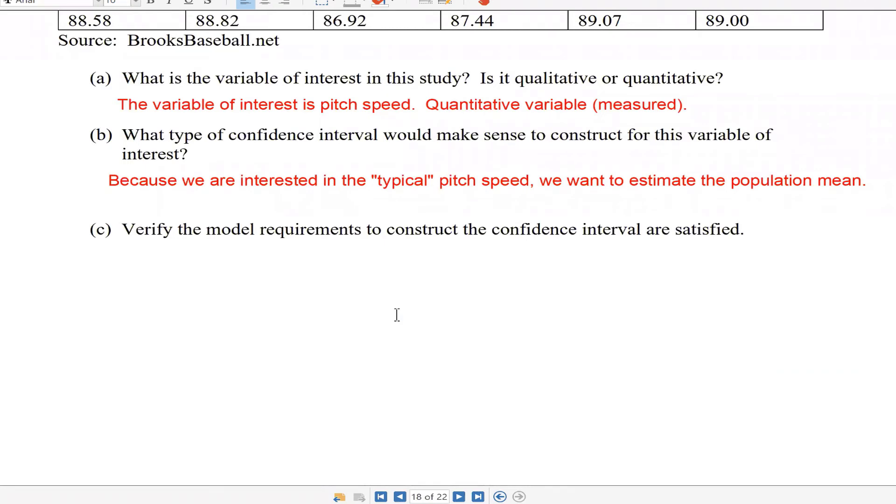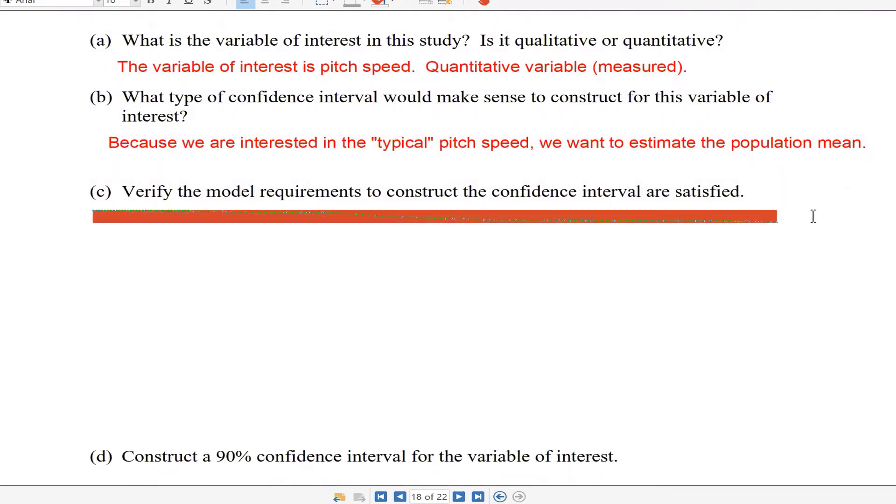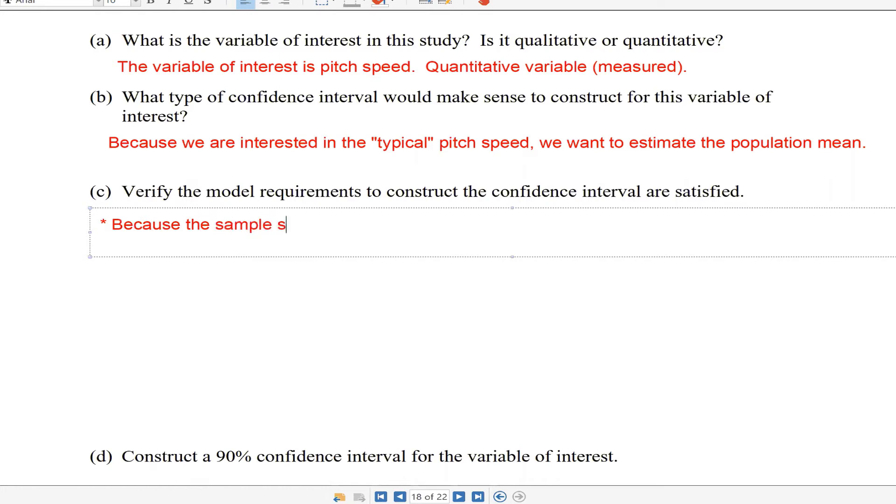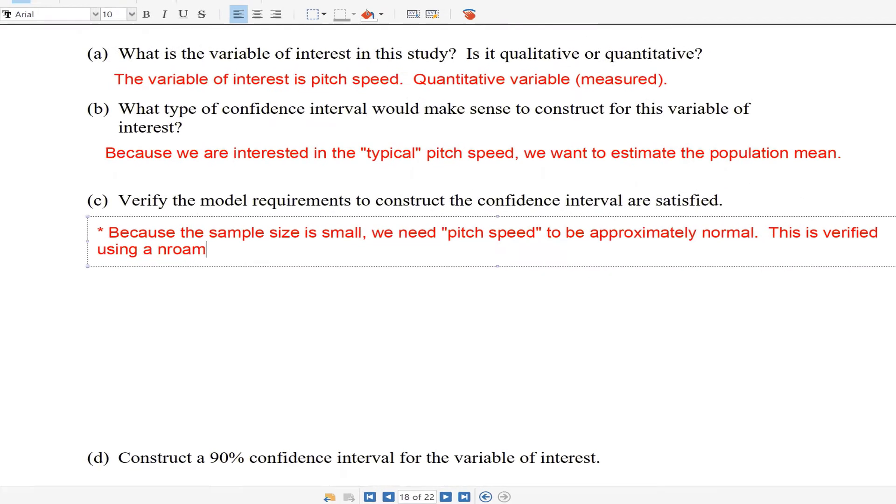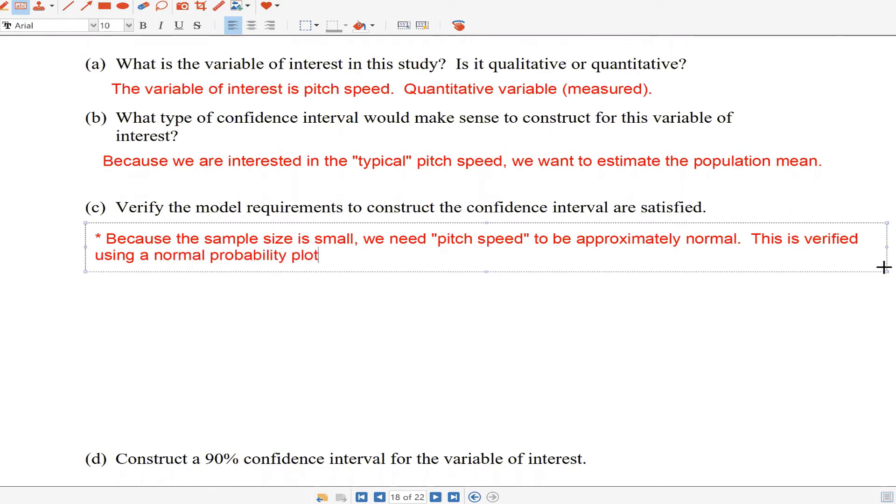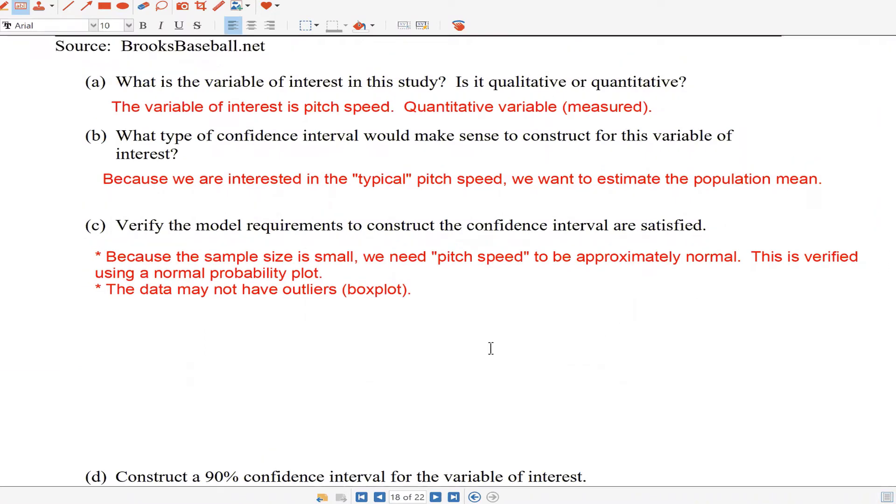It says verify the model requirements are satisfied. For students' T-distribution, there were two model requirements. First, because the sample size is small, we need pitch speed to be approximately normal. This is verified using a normal probability plot, the QQ plot in StatCrunch. The data may not have outliers either, and to do that, we're going to draw a box plot.